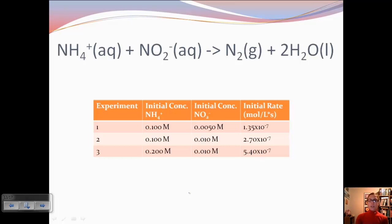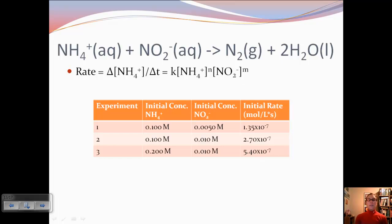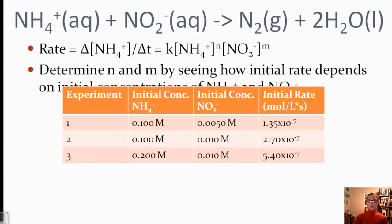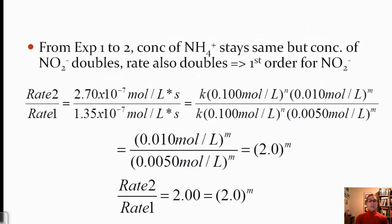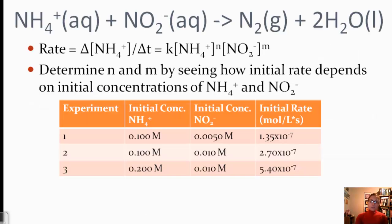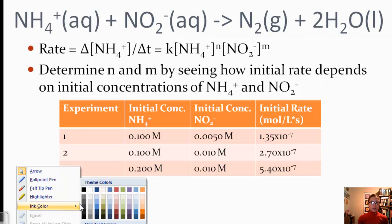Let's look at an example. We have our equation here, and we can write our rate as the change in ammonium ion divided by the change in time. Our rate law is K times the concentration of ammonium ion to the N power times the concentration of our other reactant to the M power. We can determine N and M by seeing how the initial rate depends on the initial concentrations of ammonium and NO2 minus.